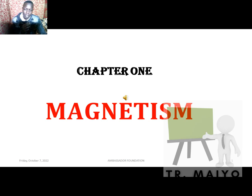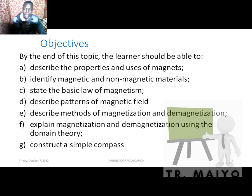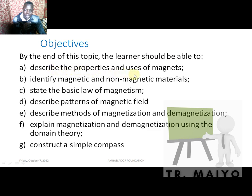We are going to see various types of magnets, but before that let's look at the objectives we are supposed to cover in this topic. By the end of this topic, the learner should be able to: describe the properties and uses of magnets, identify magnetic and non-magnetic materials, state the basic law of magnetism, and describe the patterns of magnetic field.